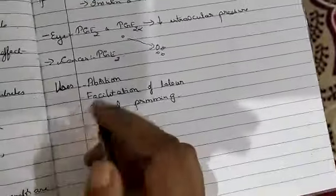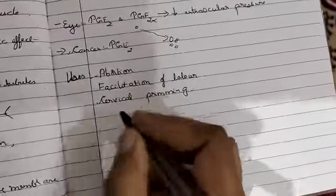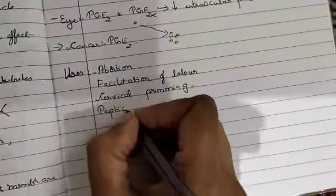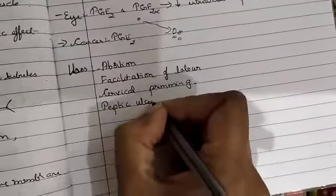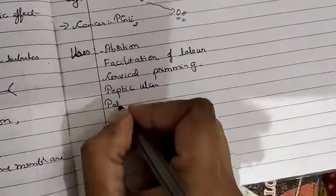These are the uses. In addition to that, it is also used in treatment of peptic ulcer, especially PGE1, then patent ductus arteriosus.